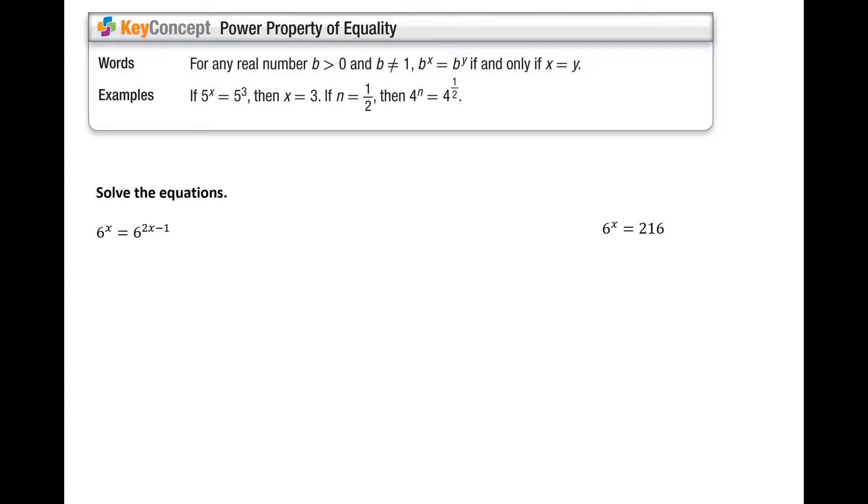So the power property of equality, in long form, it says for any real number b greater than 0 and b not equal to 1, so b is our base, if b to the x power is equal to b to the y, if and only if x is equal to y.